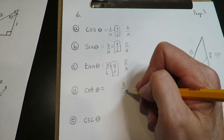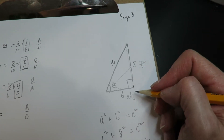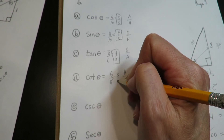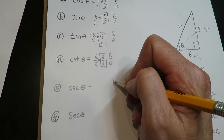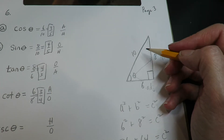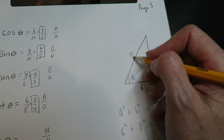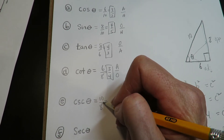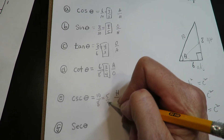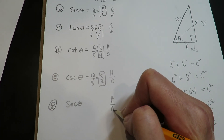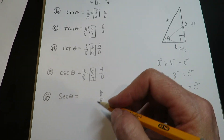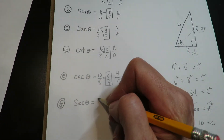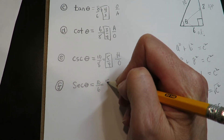Cotangent is adjacent over opposite: adjacent is six, opposite is eight, so that's six over eight, which reduces to three over four. Cosecant is hypotenuse over opposite: hypotenuse is ten, opposite is eight, so that's ten over eight, which reduces to five over four. Secant is the hypotenuse over the adjacent: that's ten over six, which reduces to five over three.